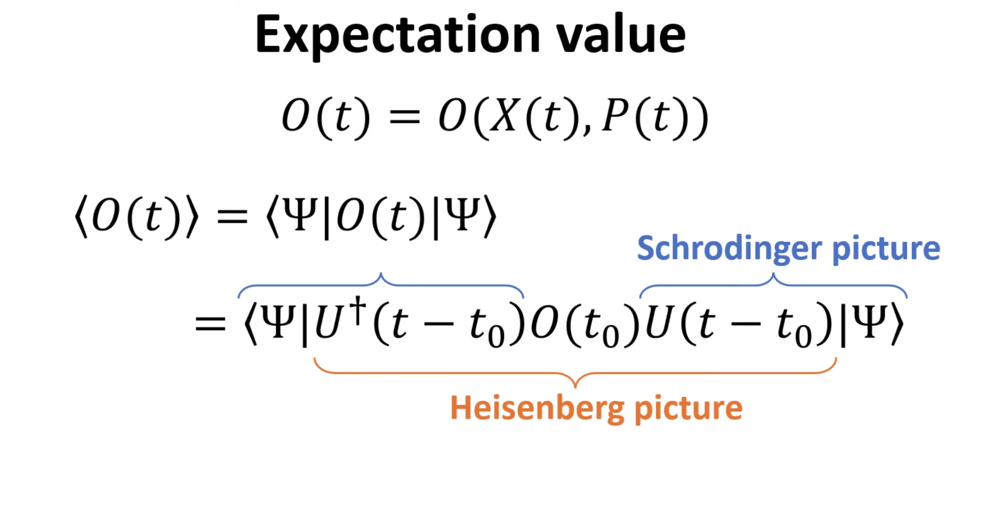Consider here a general observable O which is a function of x and p. Written in the Heisenberg picture, the expectation value of operator O at time t is computed by taking the time evolved O at time t and collapsing it with the time zero state bra and ket as shown. It is straightforward to see that both the Schrödinger and Heisenberg pictures yield the same explicit expression of the expectation value. The difference lies in the state psi vector being evolved in time in the former, while it is the observable operator in the latter.